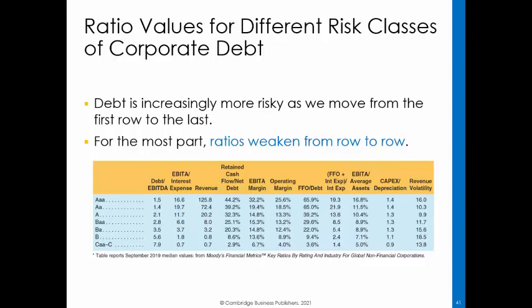In examining the ratios, recall that debt is increasingly riskier as we move from the first row to the last row. For the most part, the ratios weaken from row to row, although there are some exceptions. For example, the ratio of EBIT divided by interest expense increases from AAA to AA. Moody's explains discrepancies such as this by noting that qualitative and forward-looking considerations are important. When Moody's analyzes financial ratios, it uses a multivariate approach. As a result, a simple monotonic relationship between ratings and any single ratio should not generally be expected.